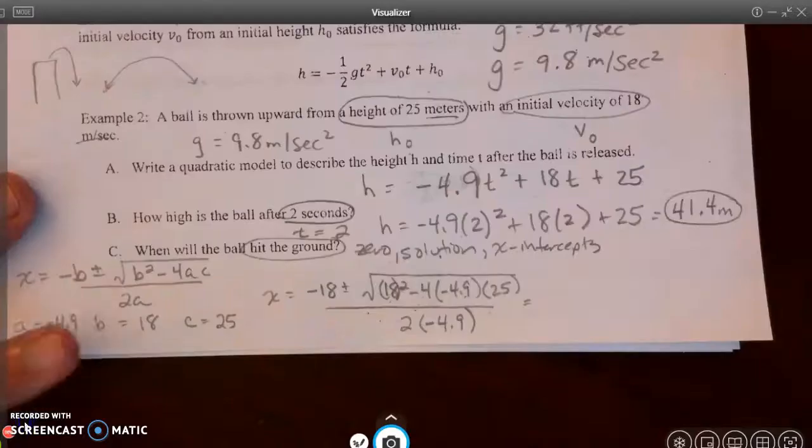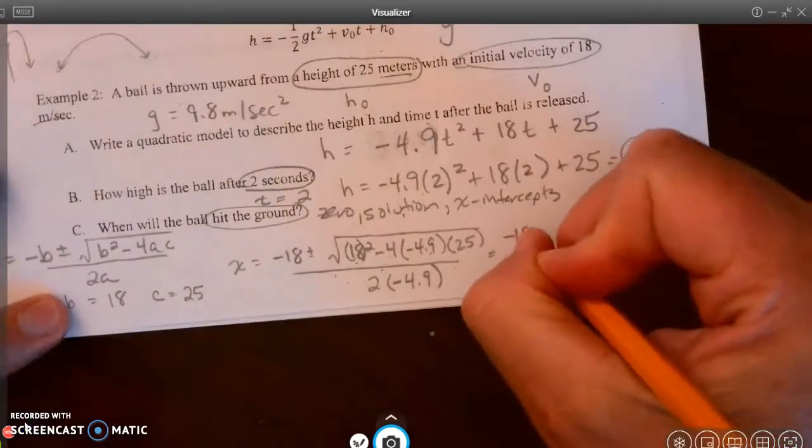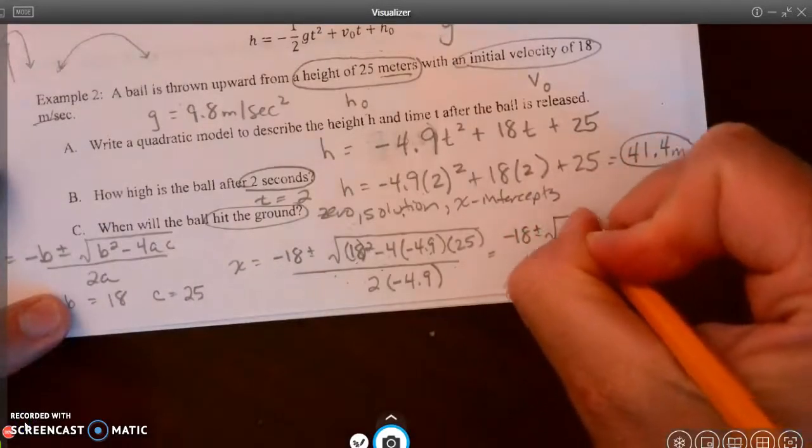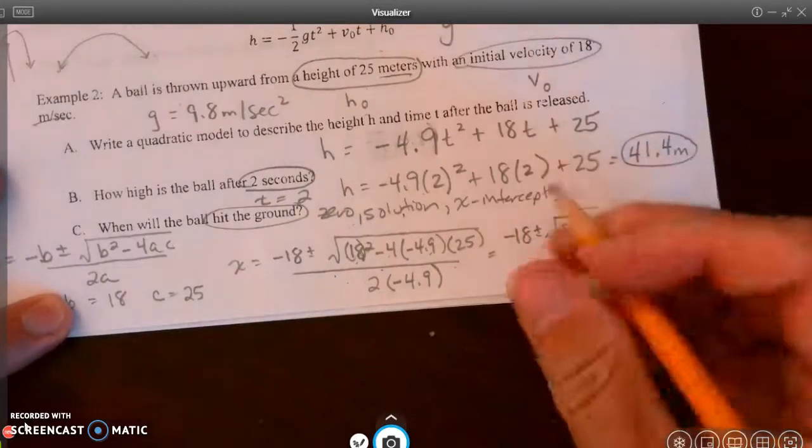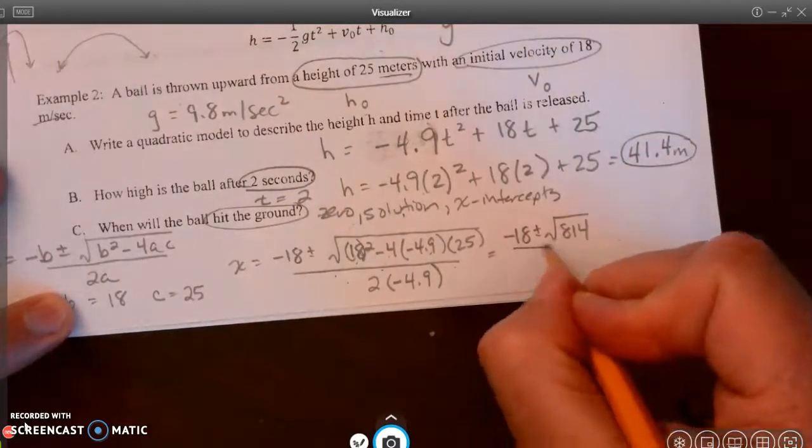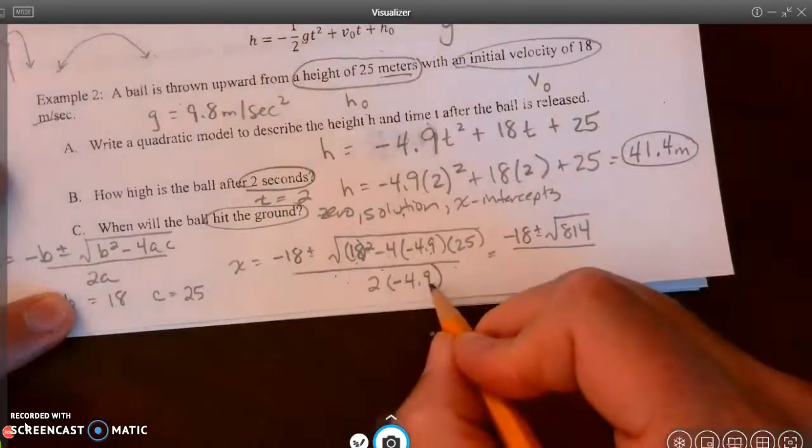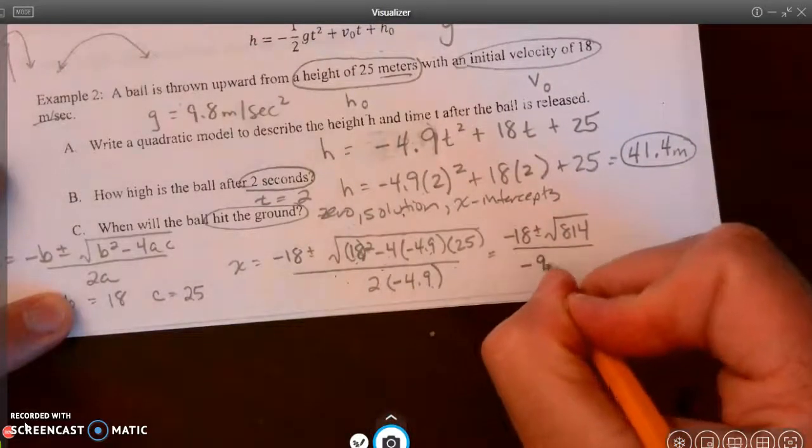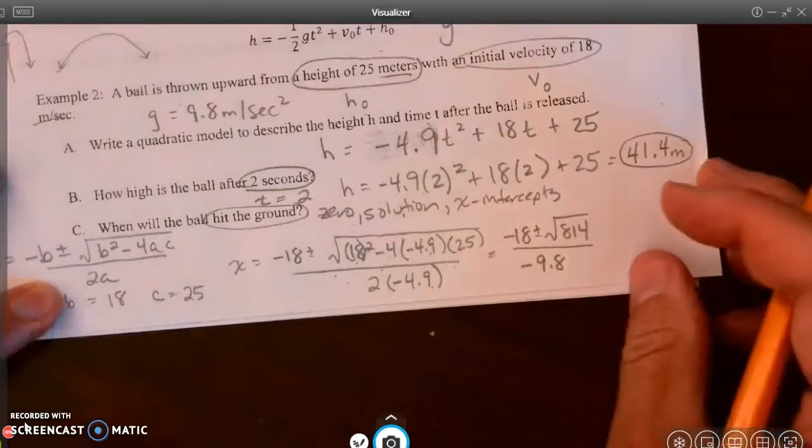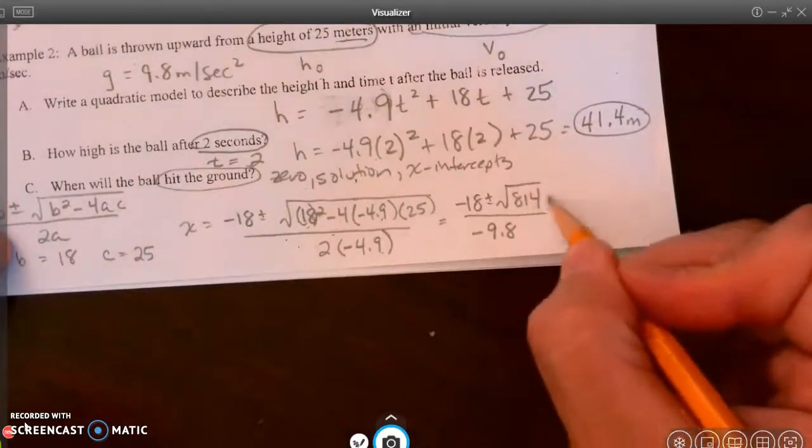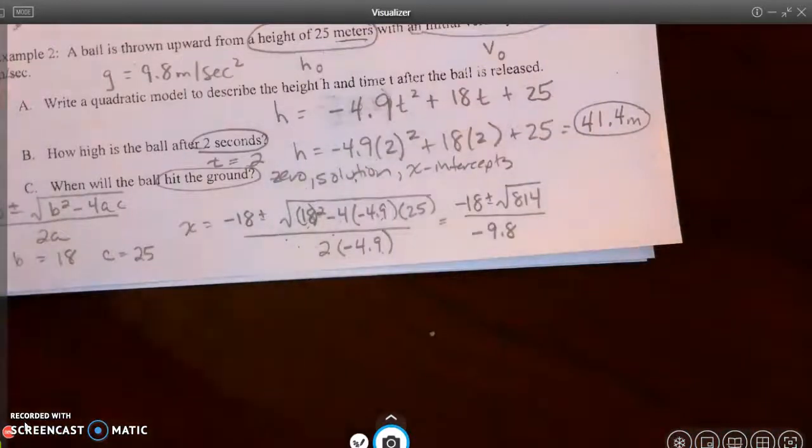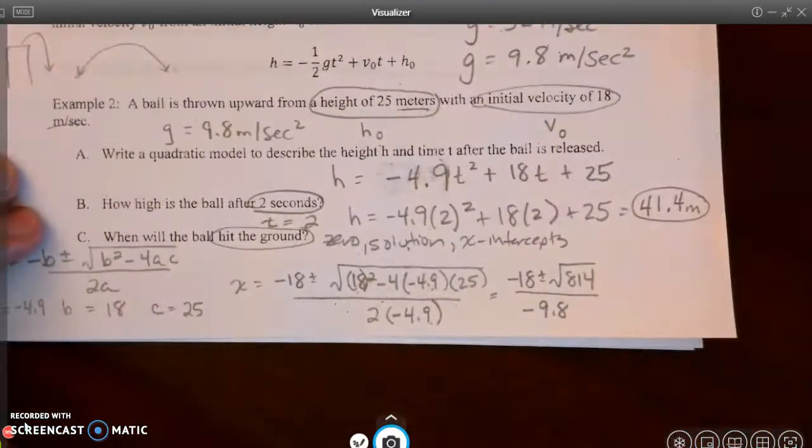So I'm going to go back to my paper, and I've got negative 18 plus or minus the square root of 814 all over 2 times negative 4.9, and it was negative 9.8. And the next thing I need to do is I need to reduce or figure out what the square root of 814 is. So that's going to take me back to my calculator.